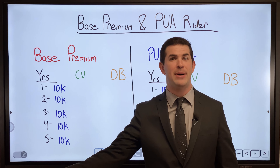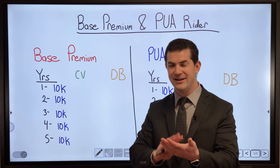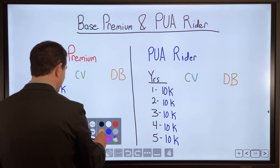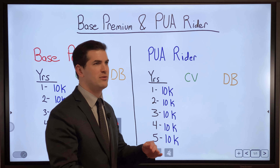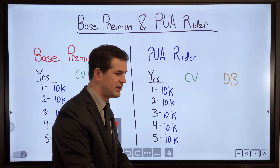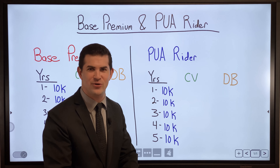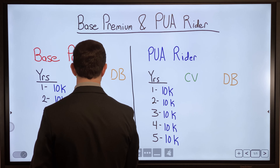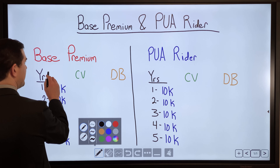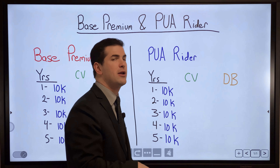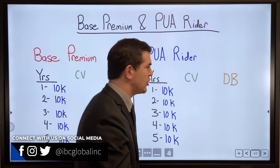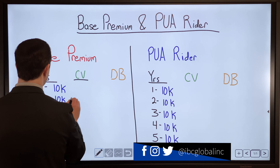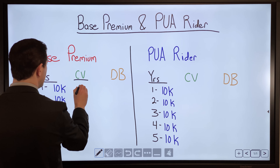When I pay money into the PUA rider, it buys what's called paid up additional life insurance. For simplicity, we have content that goes really deep into the nitty-gritty with illustrations, but here we'll show what happens if I pay $10,000 per year into both the base premium and the PUA component.